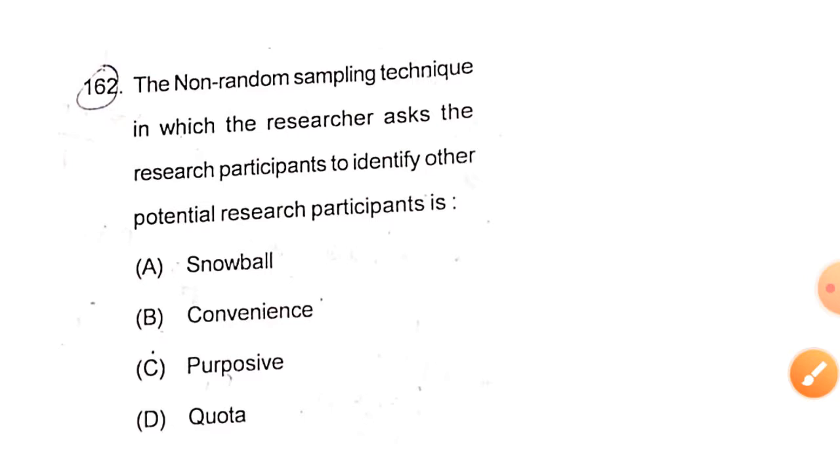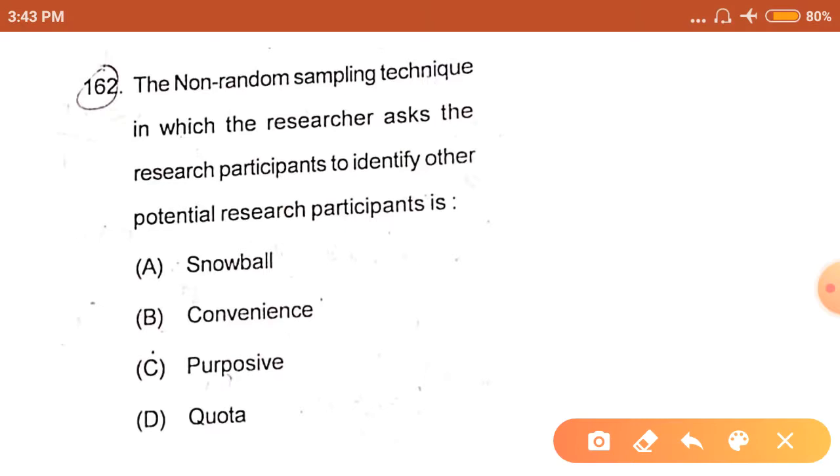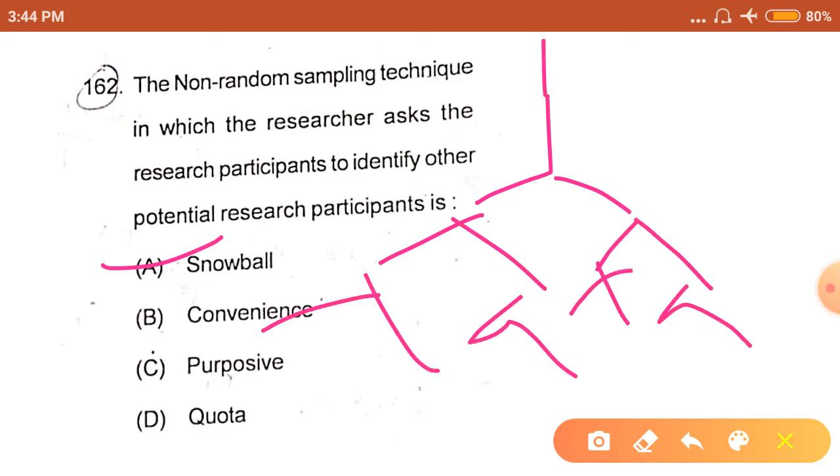The next question is: the non-random sampling technique in which the researcher asks the research participant to identify other potential research participants... This type of sampling is known as snowball sampling, in which participants also identify other participants. This is the chain-based method in which one participant sources another participant. This is snowball sampling.